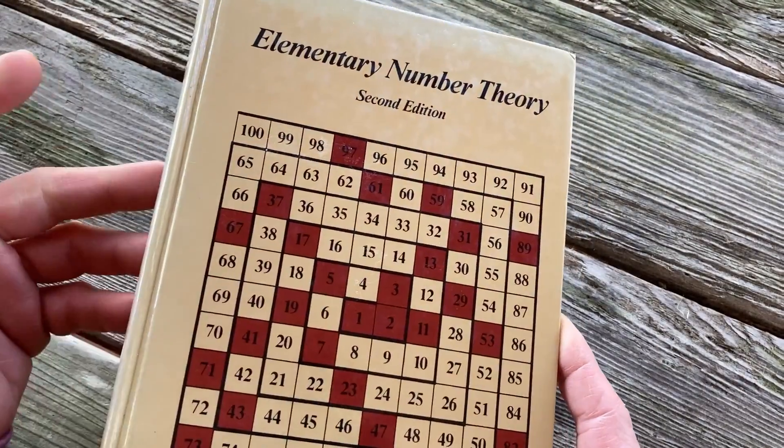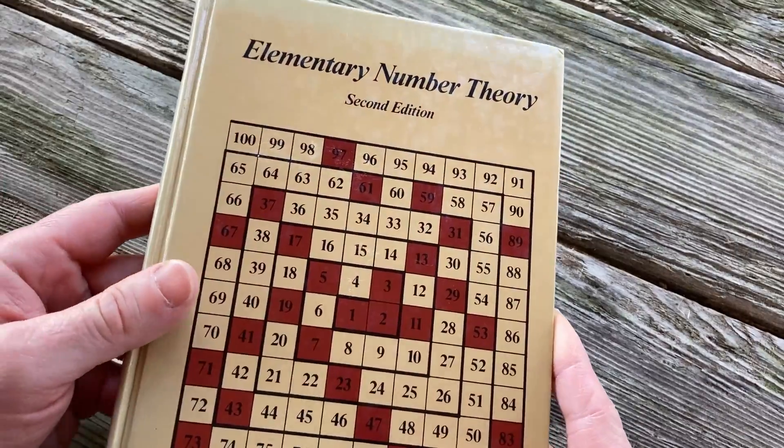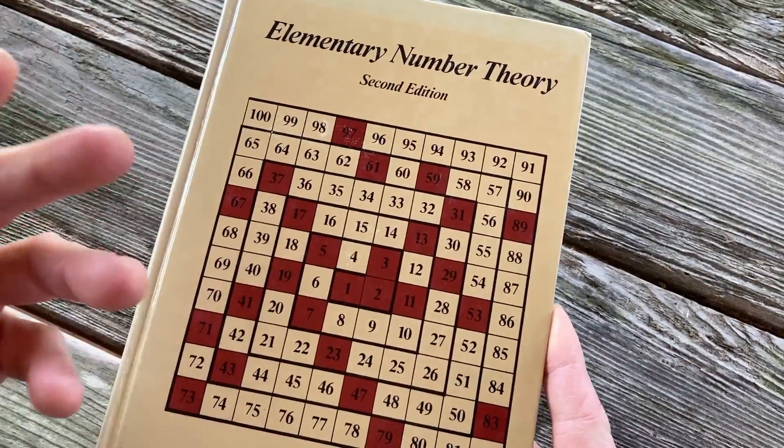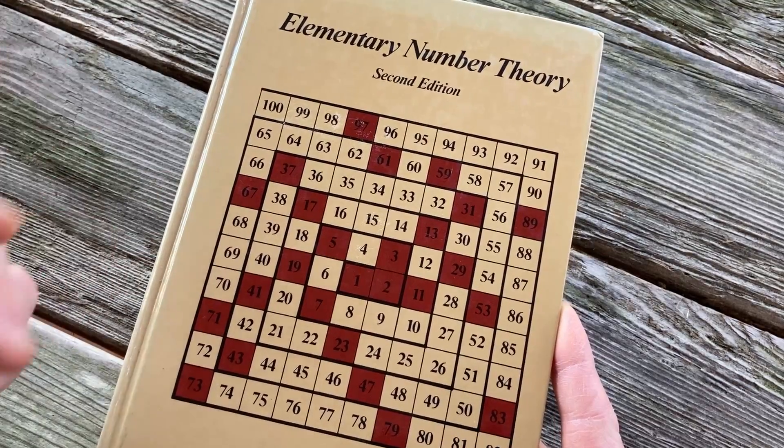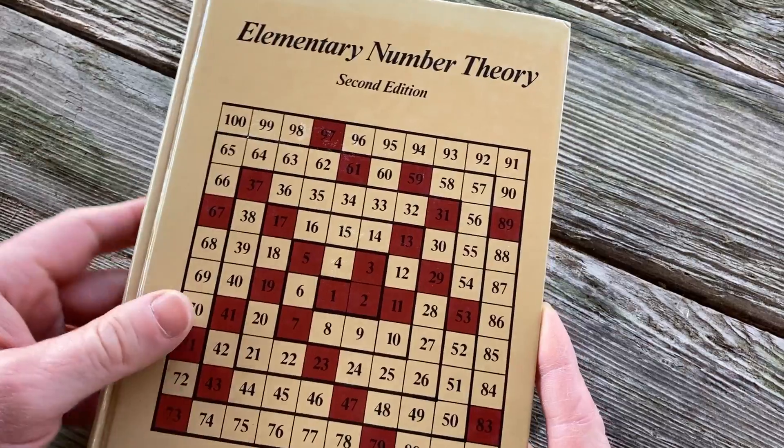So what I did as a collector of math books, I bought several number theory books and this is one I've had for quite some time. All the number theory I know I've learned from these books via self-study or from other courses like abstract algebra. I've taken several courses on abstract algebra and it comes up there quite a bit.